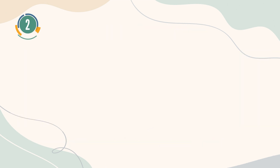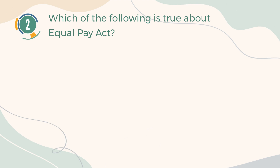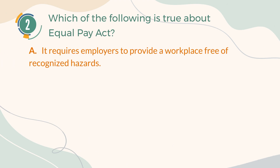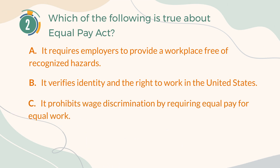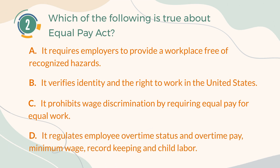Number 2. Which of the following is true about the Equal Pay Act? A. It requires employers to provide a workplace free of recognized hazards. B. It verifies identity and the right to work in the United States. C. It prohibits wage discrimination by requiring equal pay for equal work. D. It regulates employee overtime status and overtime pay, minimum wage, record-keeping, and child labor.